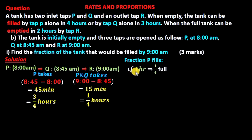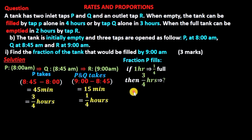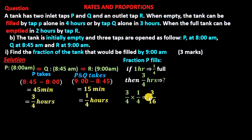If it takes 1 hour to fill a quarter of the tank, then for the 3 over 4 hours that P runs between 8 a.m. and 8:45 a.m., cross-multiplying gives 3 over 4 times 1 over 4, which equals 3 over 16. So 3 over 16 is the fraction of the tank that tap P fills between 8 a.m. and 8:45 a.m.